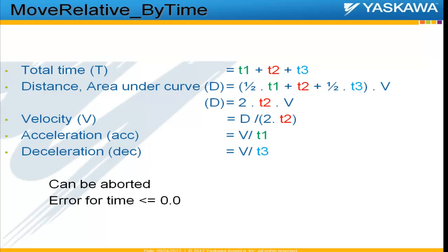The calculation inside Move Relative by Time works as follows: the total time given as input is broken into acceleration time T1, constant velocity time T2, and deceleration time T3. The distance is used to calculate velocity, and using velocity, the acceleration and deceleration are calculated inside the function block.